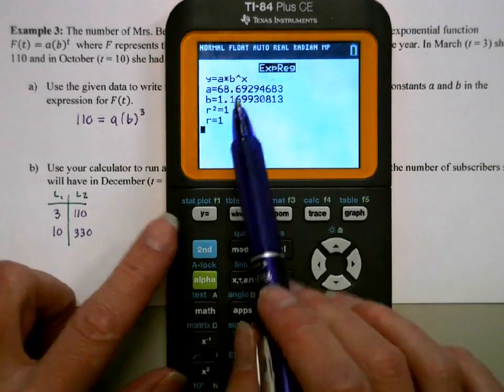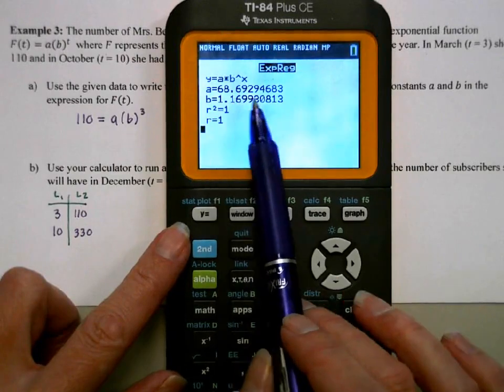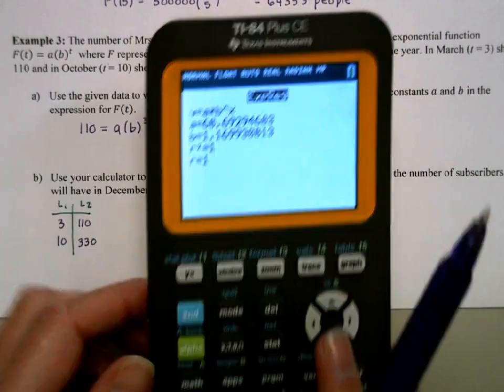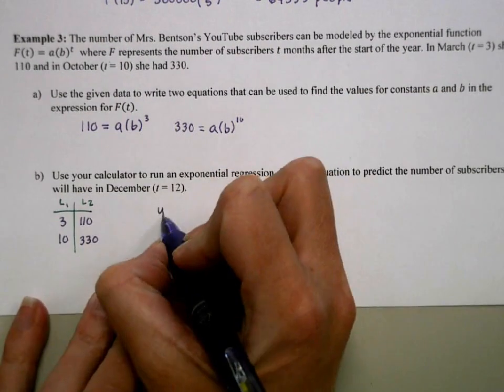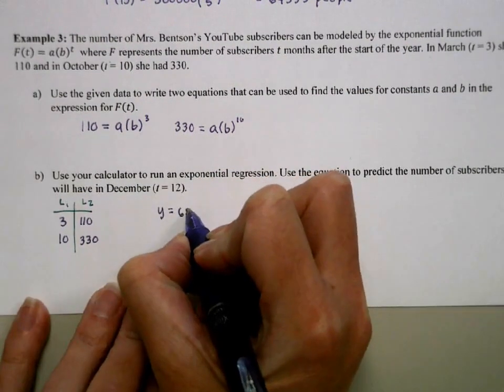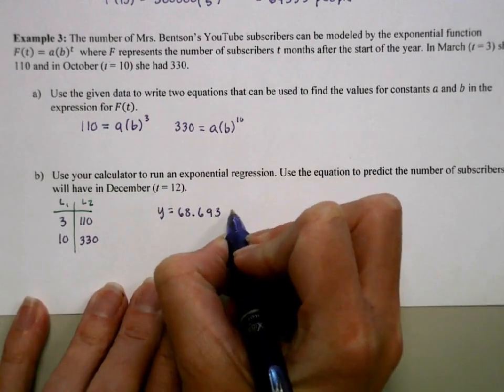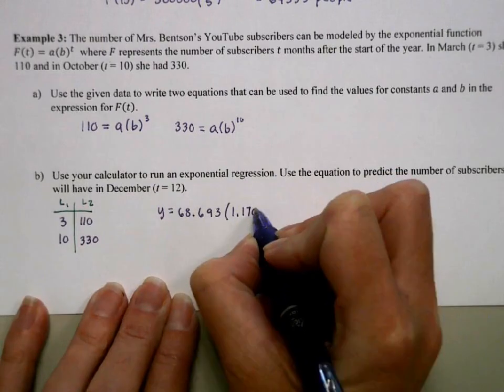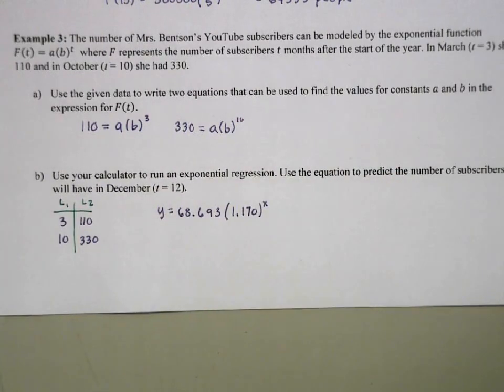So it gives us our general form, a times b to the x, and then it gives us a, and it gives us b. I'm just going to truncate this one when writing it down. So we get 68.693, and then my b was 1.170 to the x.